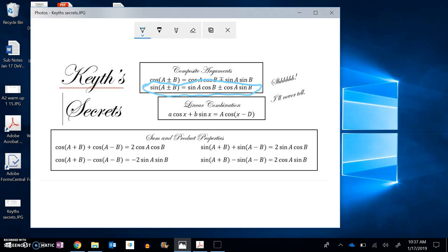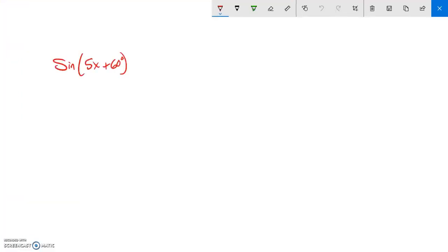I know that sine of something plus something is sine of the first, cosine of the second, same operator, cosine of the first, sine of the second.